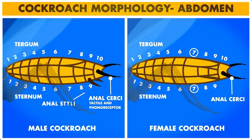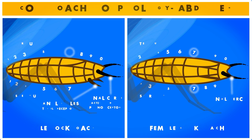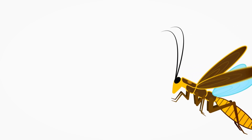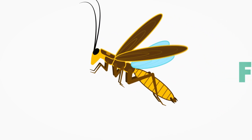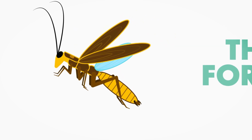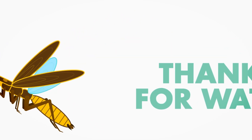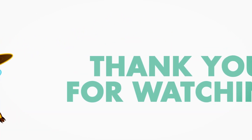A pair of thin and small outgrowths called anal styles also arise from the 9th sternum in male cockroaches but are absent in females. These structures also contain tactile receptors. That is all for the morphology of cockroaches. If you found this video helpful, make sure you like the video and subscribe to my channel.